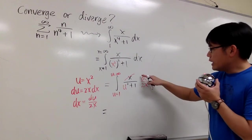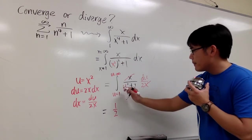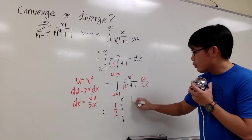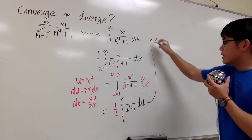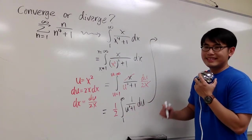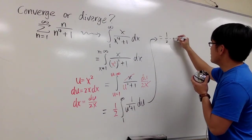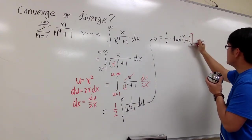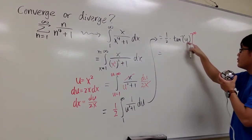We have 1 over 2 — let's take that outside the integral — so we have 1 over 2 times the integral from 1 to infinity of 1 over u squared plus 1 du. How do we integrate 1 over u squared plus 1? This is just inverse tangent. So we get 1 half times the inverse tangent of u, evaluated from 1 to infinity. Plug infinity into u first, then subtract plugging 1 into u.